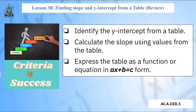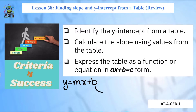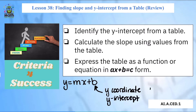Welcome to lesson 38: finding slope and a y-intercept from a table. We're looking for these two — not the x-intercept — because it connects to the formula y equals mx plus B that we've used when talking about the equation of a line on a graph. The B is our y-coordinate in a y-intercept — that's the point when x is zero, we figure out what y is.